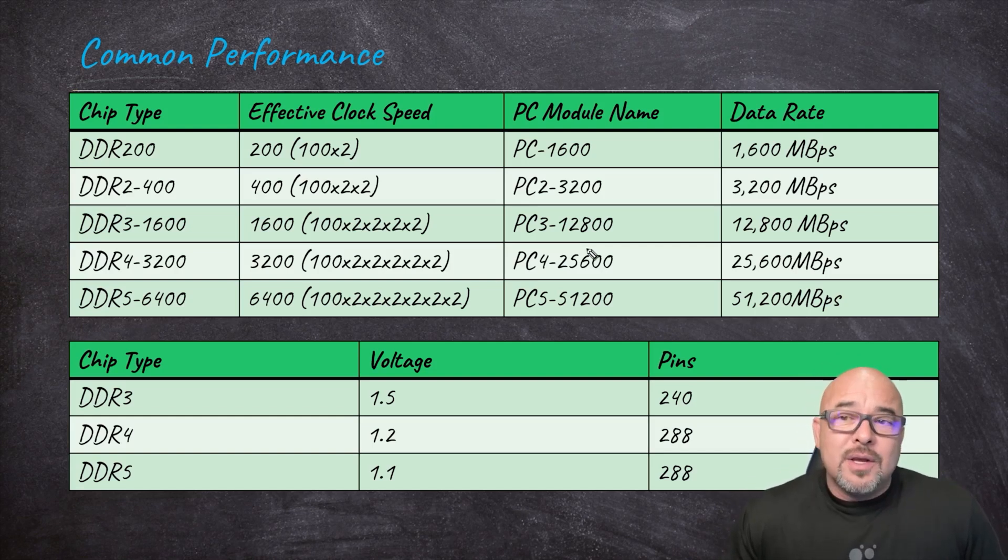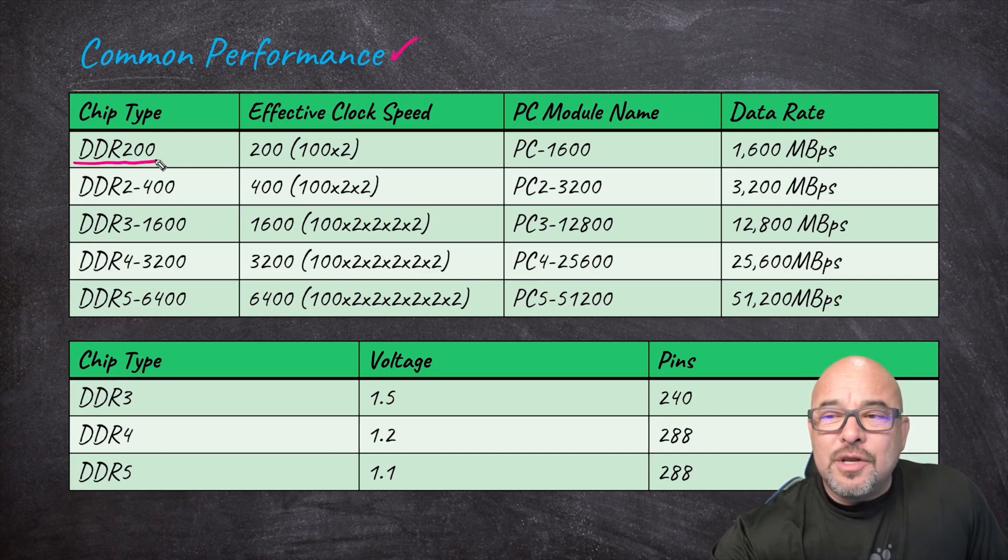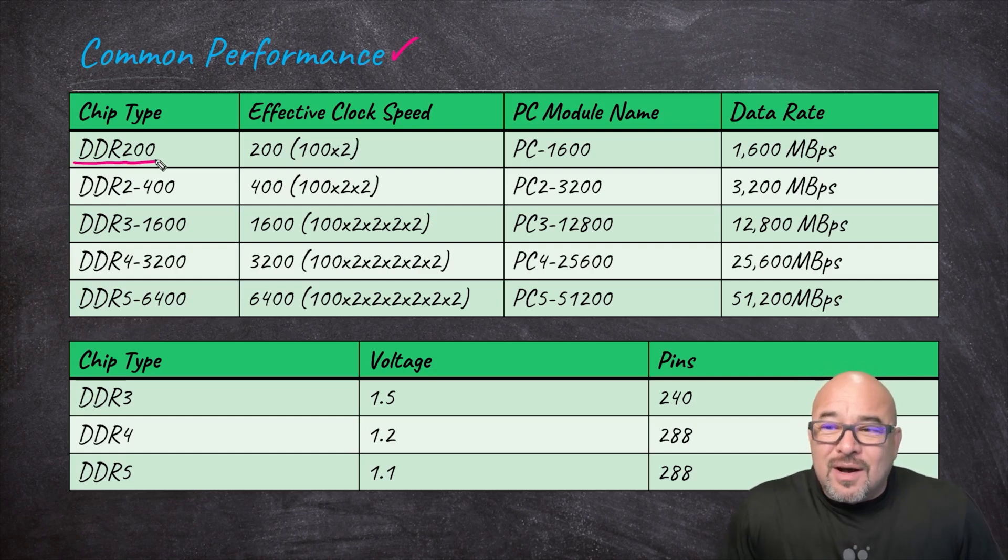So here we're going to be taking a look at the common performance measures for that. For this I'm going to start with something you don't have to know if you're an A+ student, and that would be DDR. I'm going to use DDR200. There's a lot of different ones. I haven't listed all of them, they really wouldn't all fit on here, but here's some common measures that we can use.